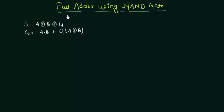In this presentation we will implement the full adder by using only the NAND gate. You already know that the sum in case of full adder is given as A XOR B XOR CI, where CI is the input carry, and the output carry CO is given as A AND B OR CI AND (A XOR B).